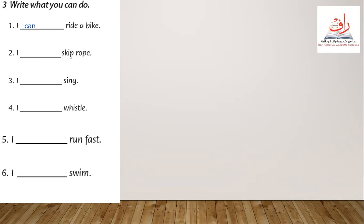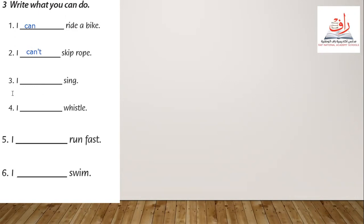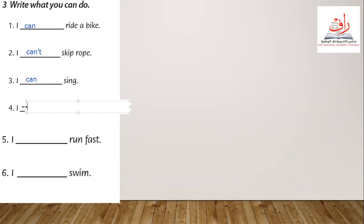Number three — what about sing? I can sing, or I can't sing? I can sing. Number four: I whistle. We have something missing — I can whistle. Number five: I run fast. I can't run fast. Number six, you can write can or can't — it depends on you. Write what you can do.